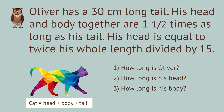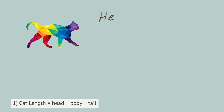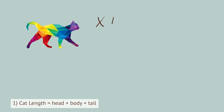We can convert the sentences into equations — three equations, three unknowns — so we do have enough information to solve for everything. Head plus body plus tail equals Oliver's whole length. I'm going to use x, y, and z for the three unknowns. Head is x, body is y, and whole length is z. Substituting in what we know so far: x plus y plus 30cm equals z.